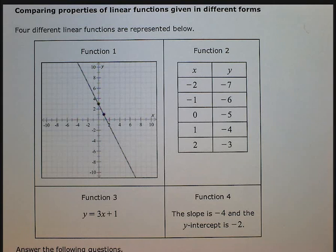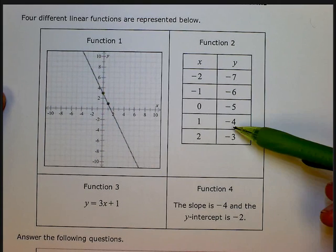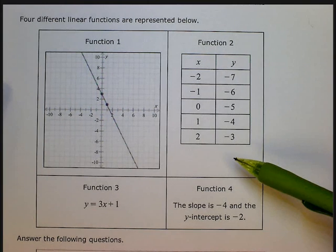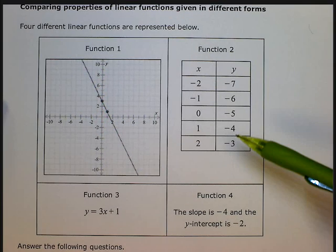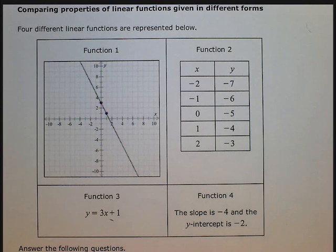Comparing properties of linear functions given in different forms. Four different linear functions are represented below. Here's a graph of a linear function - we can tell it's linear because it's a straight line. Here's a table of a linear function, which if we wanted we could check to see that the rate was constant, but because they're telling us it's linear we can assume that. Here's a linear equation because it's y equals mx plus b. And here's just a description of a function where they give you the slope and the y-intercept. So given these four different linear functions, we need to answer the following questions.